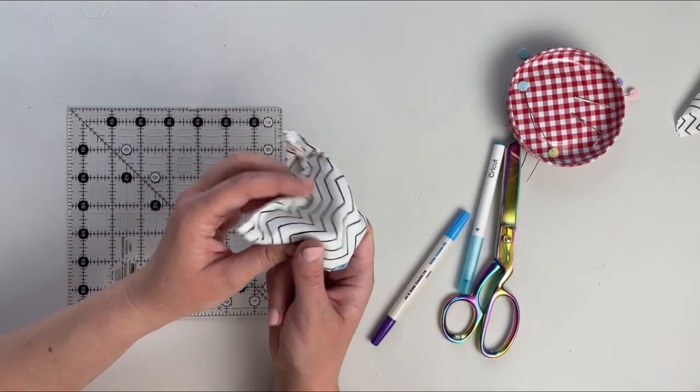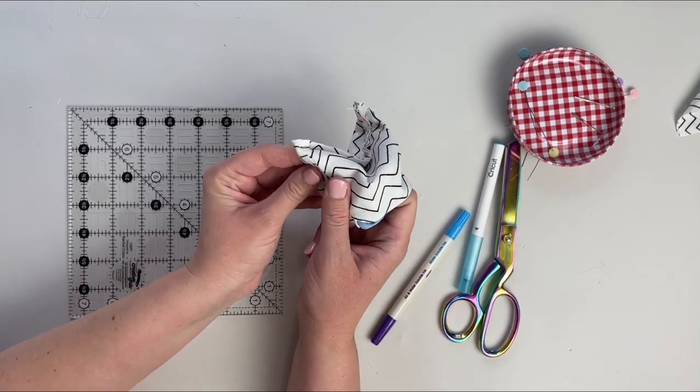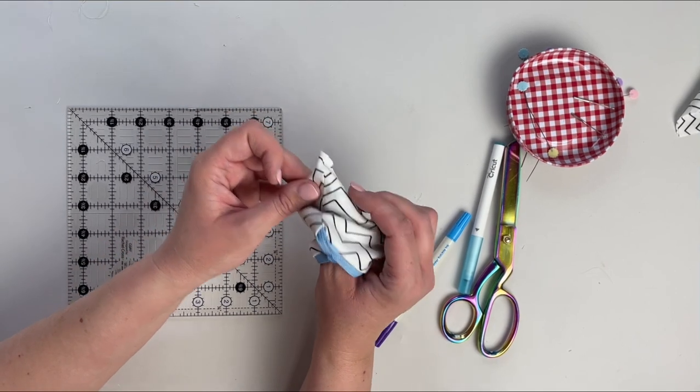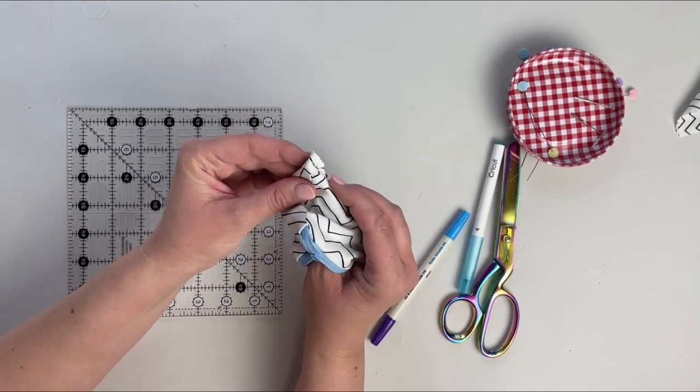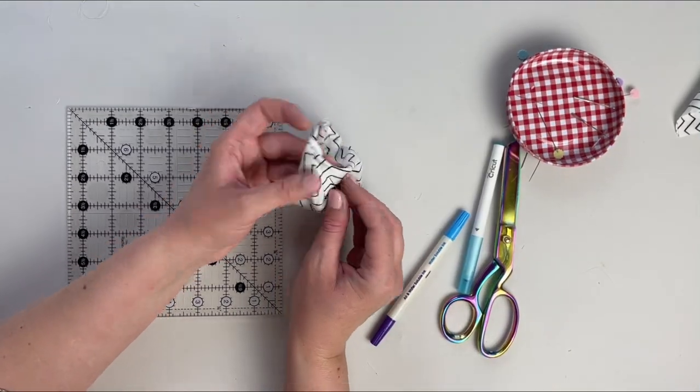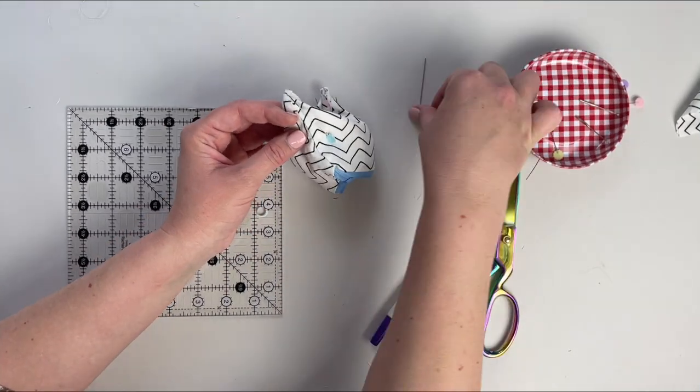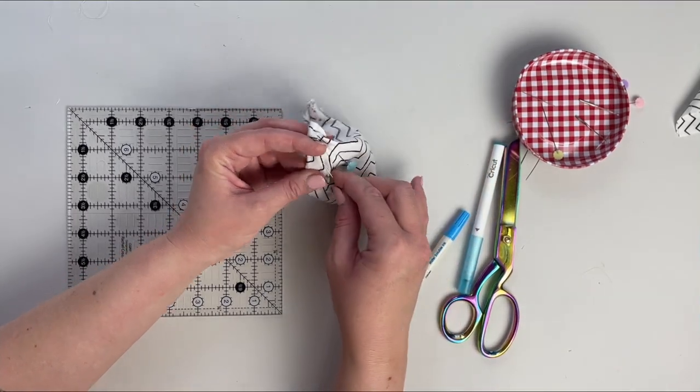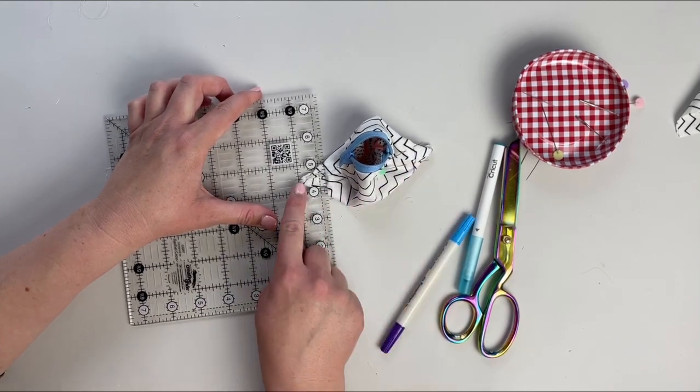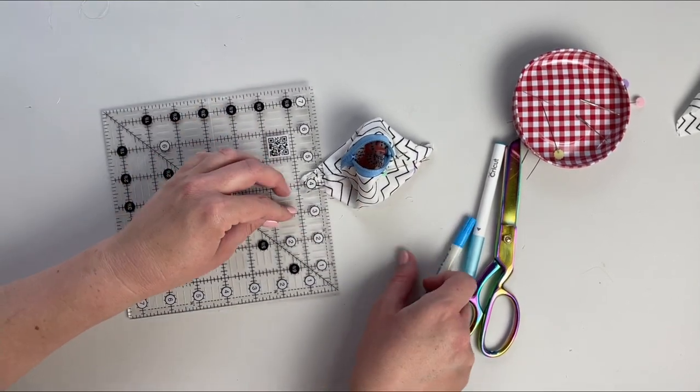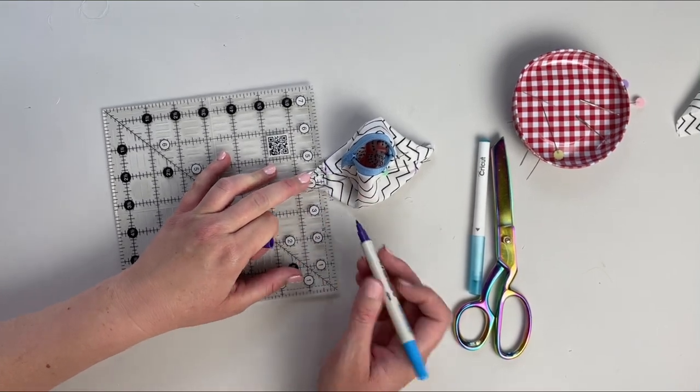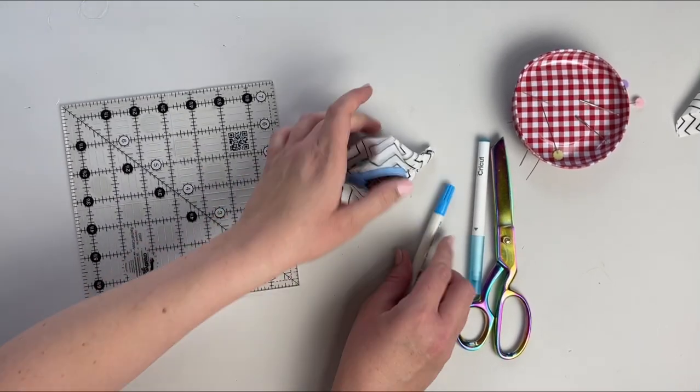And then we'll do the same thing on the other side. So we're going to pinch it, make sure to push the fabric out, and I'm going to pin it right now and then draw the line on top. So 3/8 inch from our little point. And then we'll just sew right across those and backstitch.